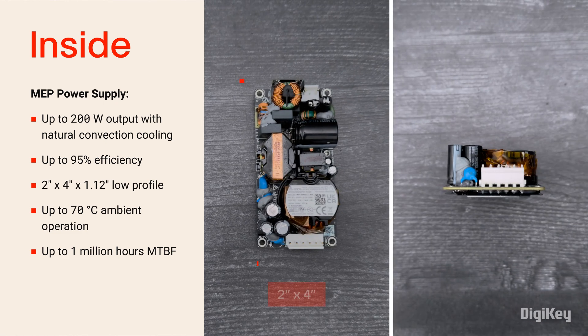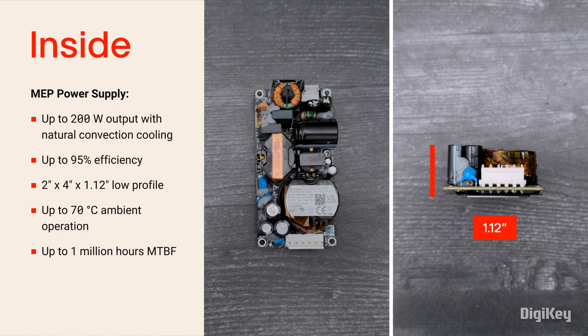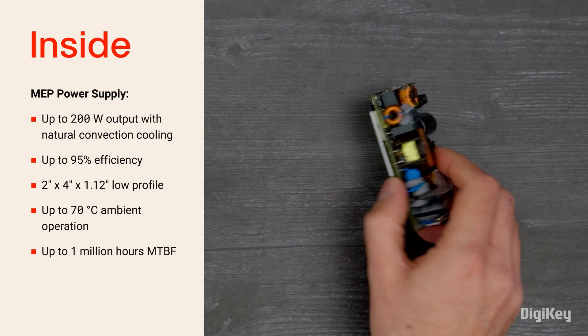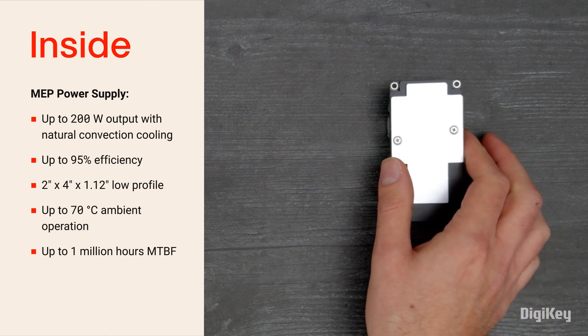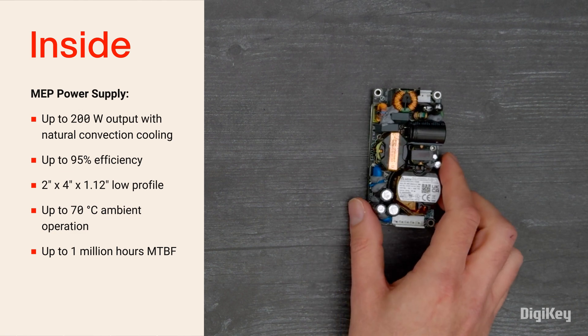The power supply has a two by four inch footprint and a 1.12 inch low profile. It's fitted with a heat sinking base plate, allowing it to operate at up to 70 degrees Celsius ambient temperature with a 1 million hour MTBF.